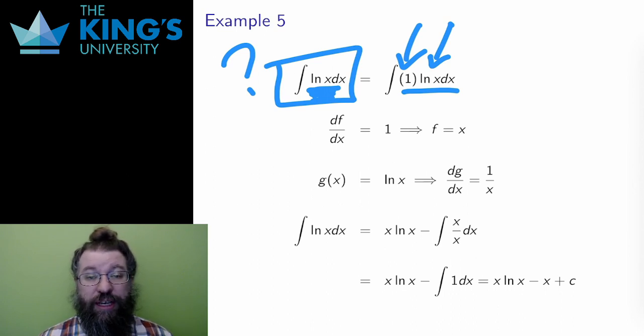I choose df/dx to be one, and g to be ln x. This choice is nice because the derivative of g will get rid of the logarithm. Then I calculate the other two pieces. The antiderivative of one is x, and the derivative of the logarithm is one over x.